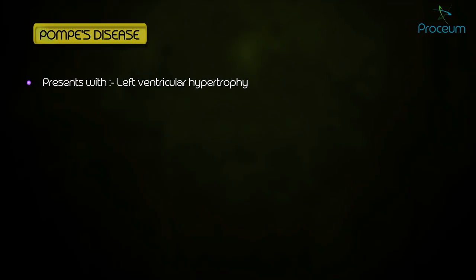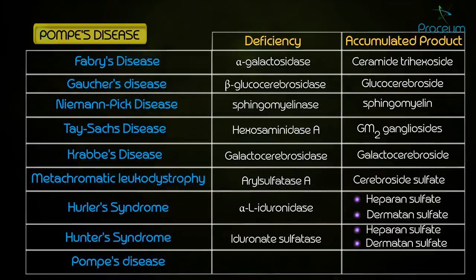Pompe's disease presents with left ventricular hypertrophy, which leads to outflow tract obstruction and cardiac failure. It has a deficiency in lysosomal alpha-1,4-glucosidase, leading to glycogen deposits in the lysosomes.